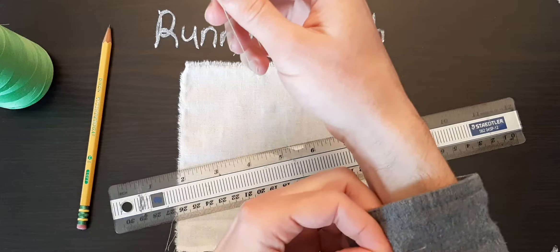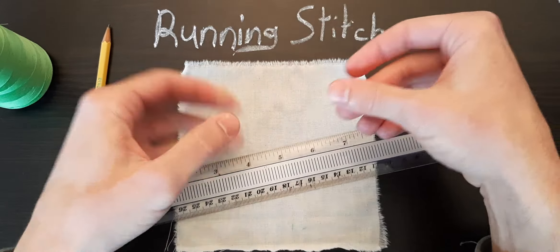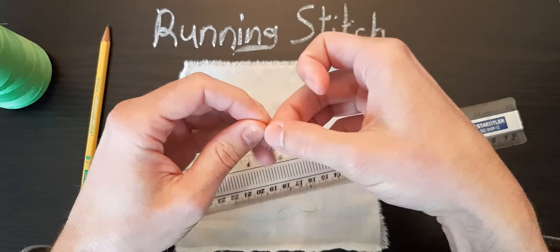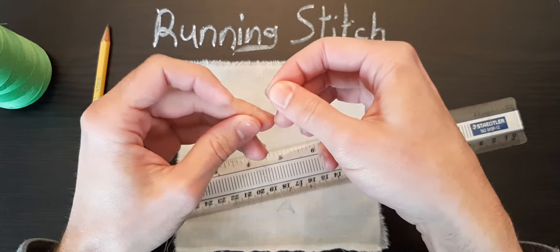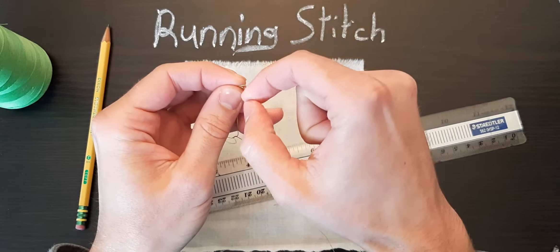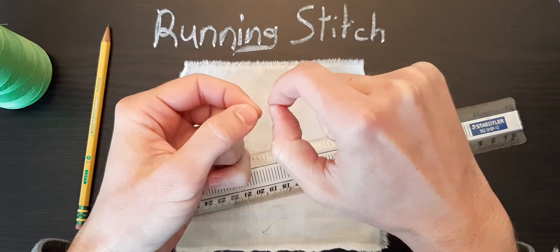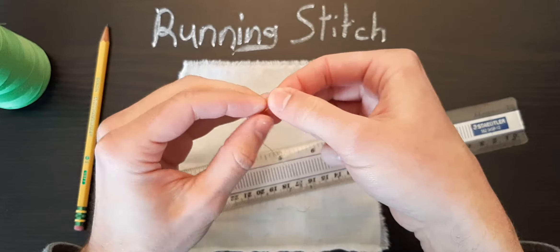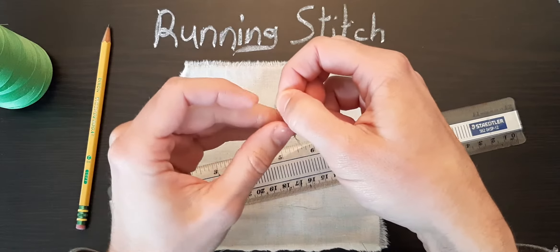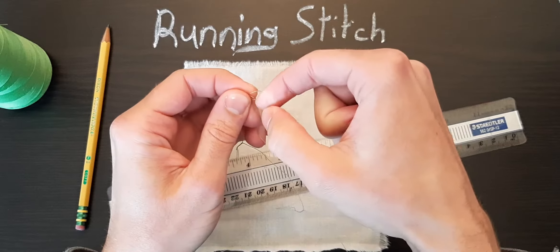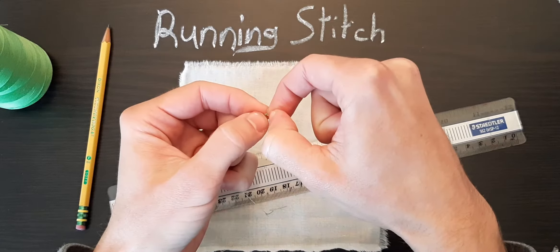So I'm going to put the knot into the end of the thread here. I do it kind of the manual way, not wrapping it around my finger, because I can never make that work. Just going to double knot it, make sure I have enough bulk there to keep the thread in place as we're sewing.